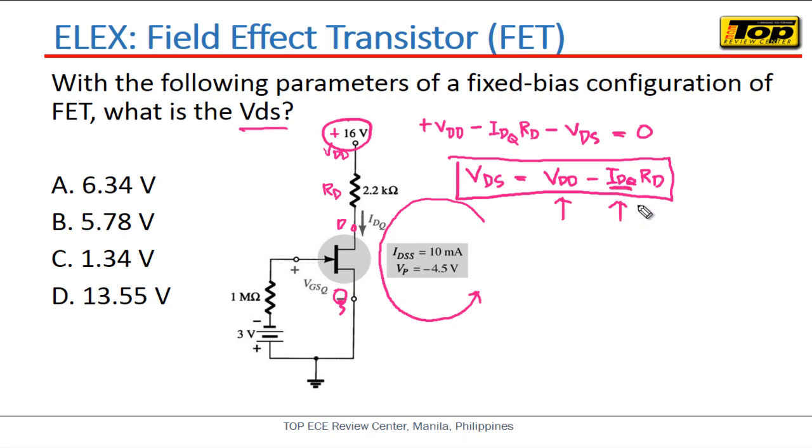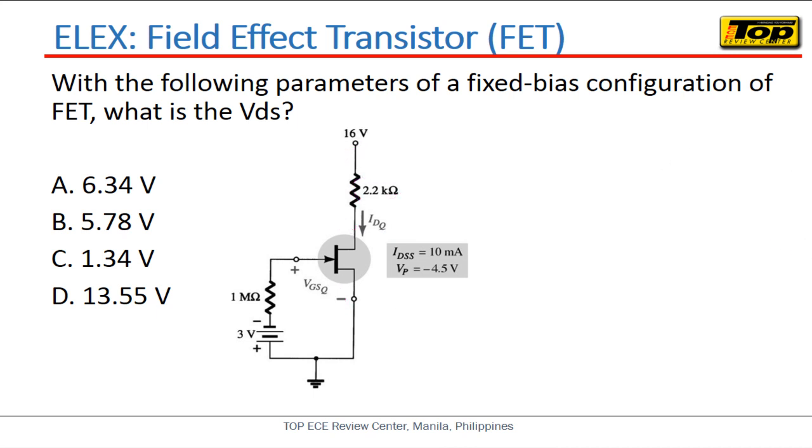Ano pa ang kailangan natin? Yung VDD is already given, that is 16 volts. Yung IDQ ay wala pa, so kailangan pa rin natin kunin yung value ng IDQ, while yung RD naman natin ay given na rin, that is 2.2 kilo-ohms. So pag nakuha na natin yung IDQ, wala na tayong problema, makukuha na rin natin yung value ng VDS.